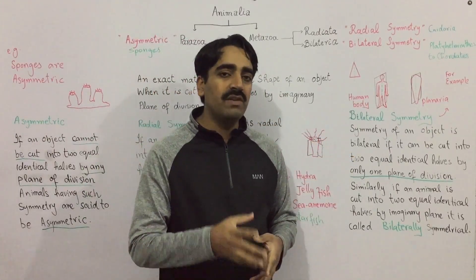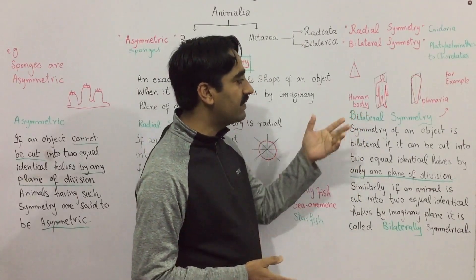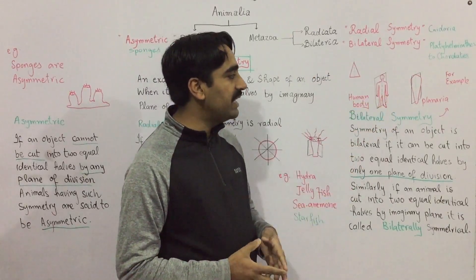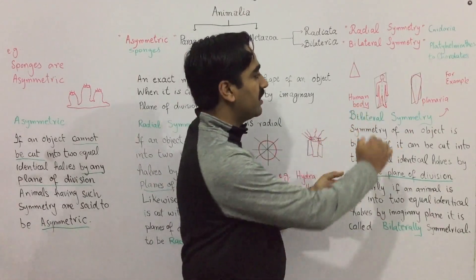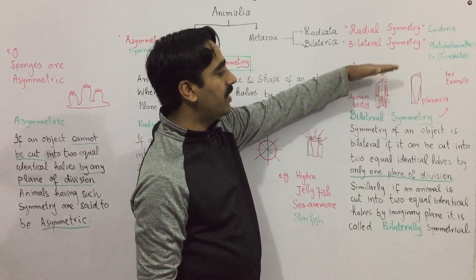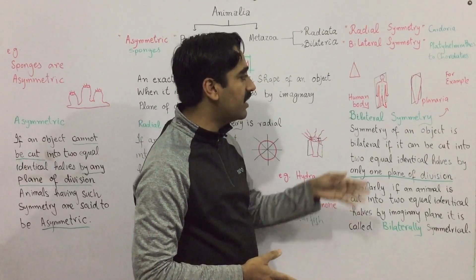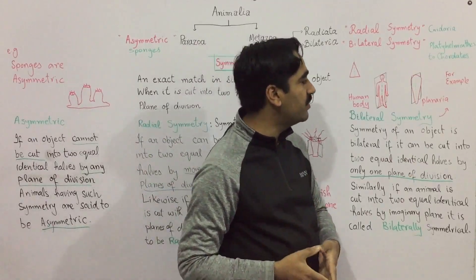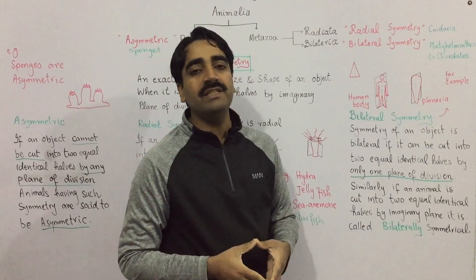The second possibility is bilateral symmetry. Bilaterally symmetrical animals have only one plane of division. As you can see in case of the human body, there is only one plane of division. If it is cut by any other plane, the halves will not be identical and it will not be considered a valid plane of division. It can be cut only by the vertical plane of division. Such animals are considered bilaterally symmetrical and are placed in the grade Bilateria.